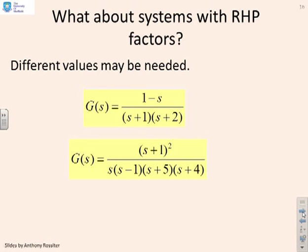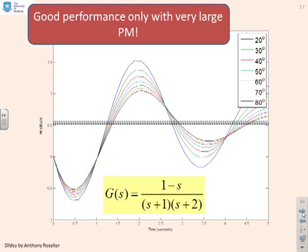What about systems with right half-plane factors? First one: right half-plane zero. Second one: a right half-plane pole. Here's the example with the right half-plane zero. You look at that behavior and say this is really, really poor—very oscillatory, very slow to settle. But the other thing you'll notice is I've plotted phase margins from 20 degrees to 80 degrees.